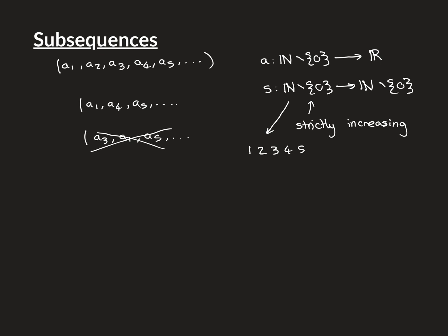The domain of S is the set {1, 2, 3, 4, 5, ...}. If we take some general natural number i and consider what S maps it to, it's going to be another natural number. We want it to be the case that S(i+1) is always strictly greater than S(i). Let me give you a concrete example of such a function, which I think will help in understanding how this corresponds to the intuitive notion of a subsequence.